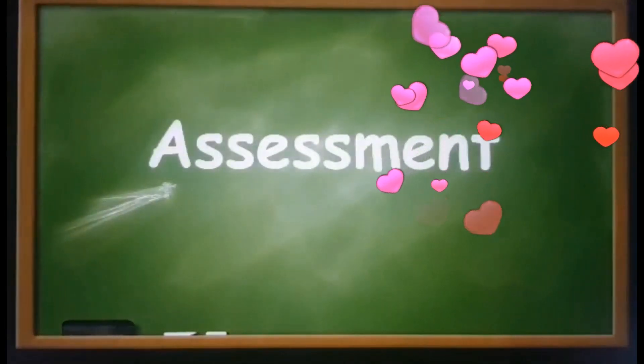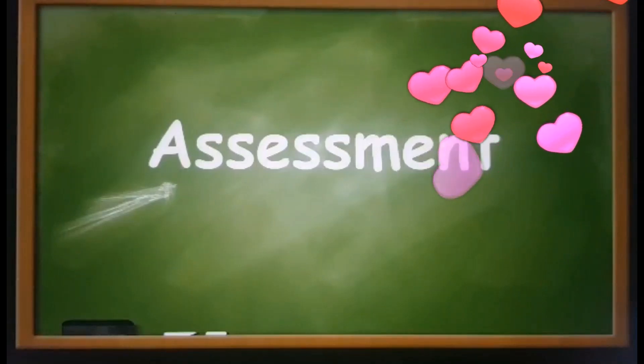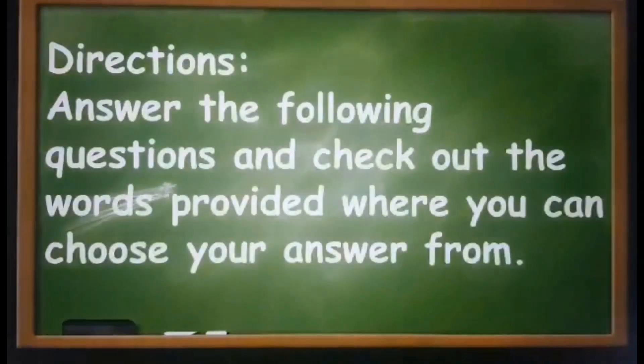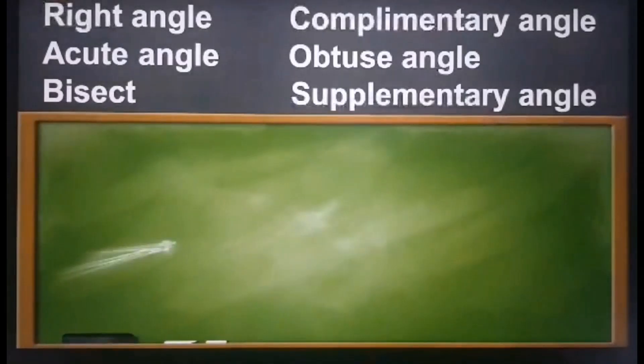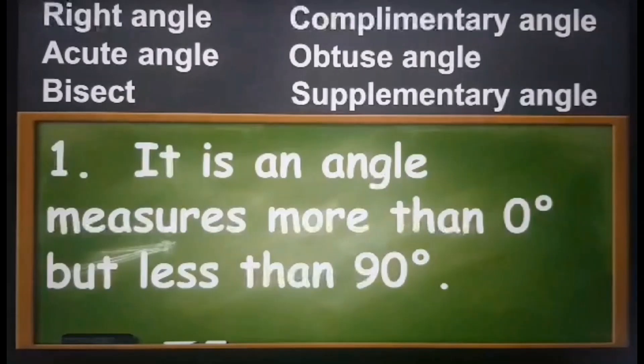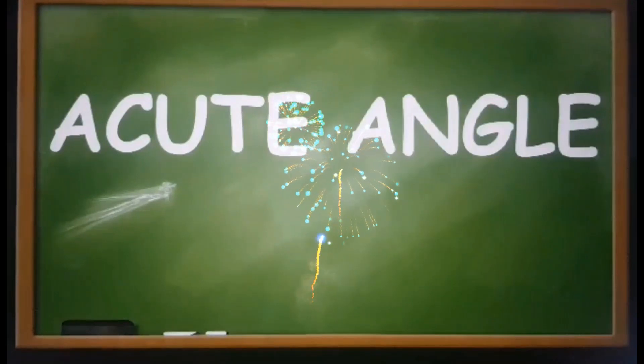Let's proceed to the next part of our lesson. Let us check if you really understood today's discussion. Directions: answer the following questions and check out the words provided where you can choose your answer from. Are you ready? Let's begin. Number one: it is an angle measured more than zero degrees but less than 90 degrees. The correct answer is acute angle. That's right.